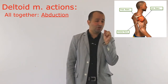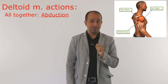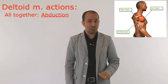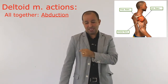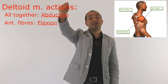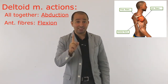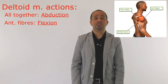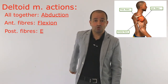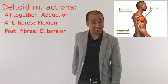But if anterior fibers work independently, they don't do abduction — they actually help with flexion of the shoulder. If you ask about the posterior fibers of deltoid, they do the opposite action: they do posterior movement, which is extension.